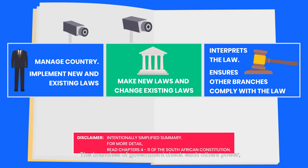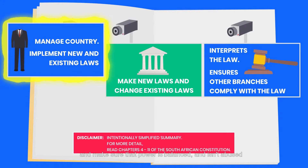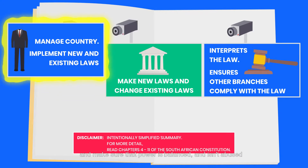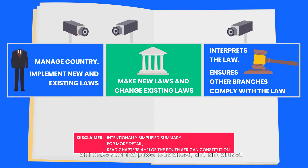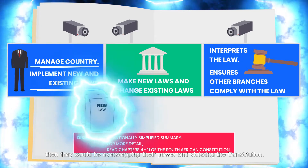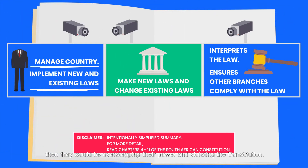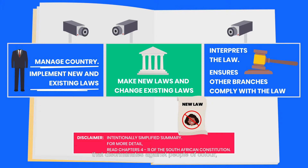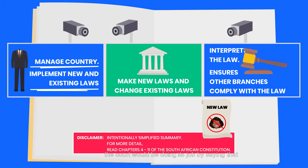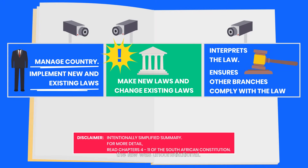The branches of government check each other's power and make sure that power is balanced and isn't abused. If one of them tries to do something that the constitution doesn't say it can do, then they would be overstepping their power and violating the constitution. For example, if the legislature passes a law that discriminates against people of colour and this was challenged in court, the court would be doing its job by saying that the law was unconstitutional.